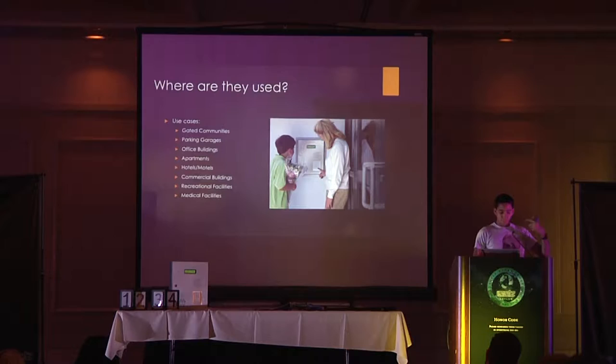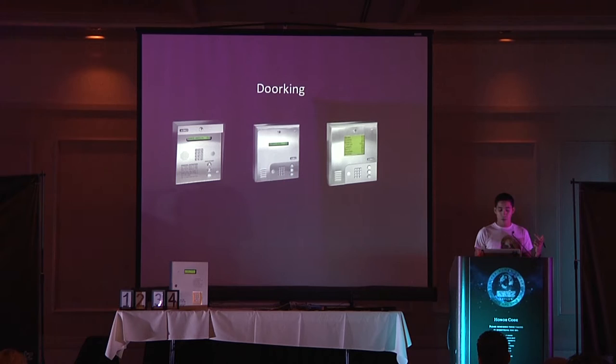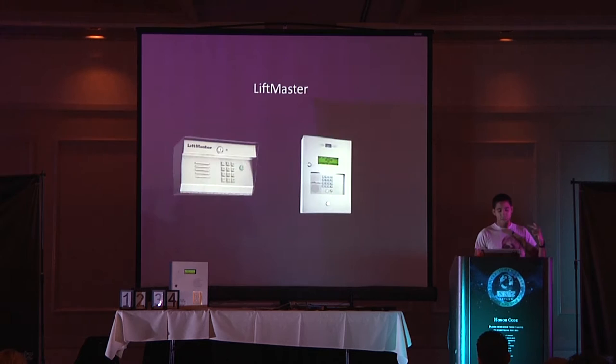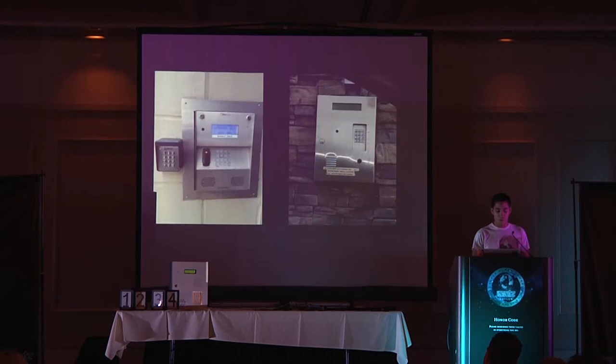Where do you see these things? Gated communities, parking garages, apartments, hotels — pretty much anywhere they want to control access. You have many different vendors: Door King, Chamberlain, Syntex, Linear. This one here is a Linear brand. They have many different models.